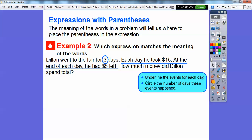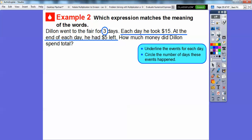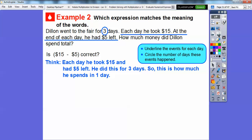We're going to underline the events that he did each day and circle the number of days that these events happened. So each day he took $15 and at the end of each day he had $5 left. So this happened for three days. So we circled the number of days these events happened, and the events each day were he took $15 and he only had $5 left. So is this expression correct? Is $15 minus $5 correct? Well, think. Each day he took $15 and he had $5 left. Well, that's for each day. He did this for three days. So this is how much he did it for one day.